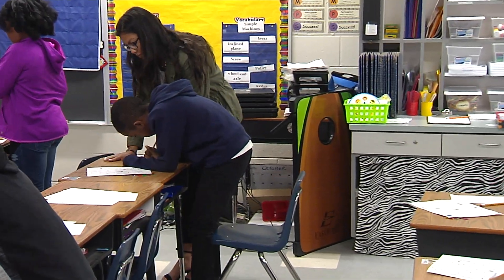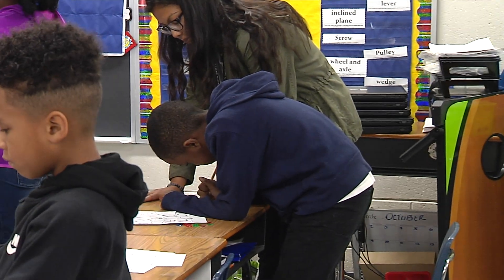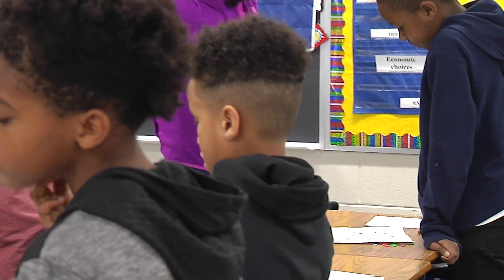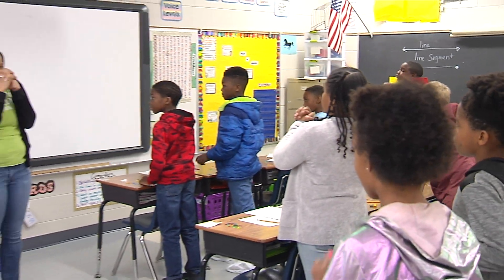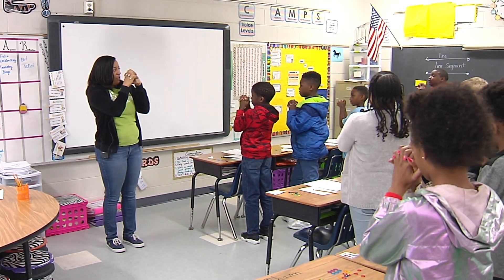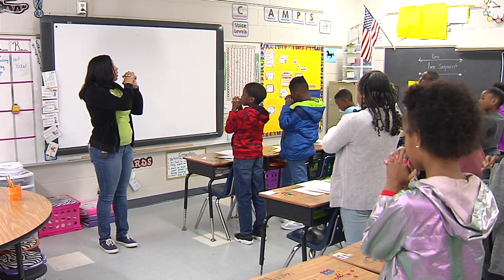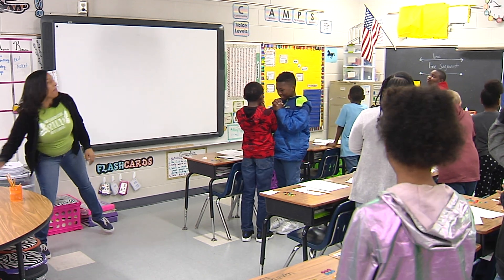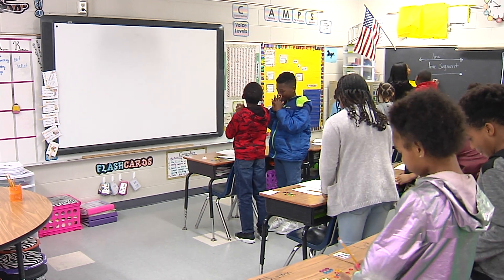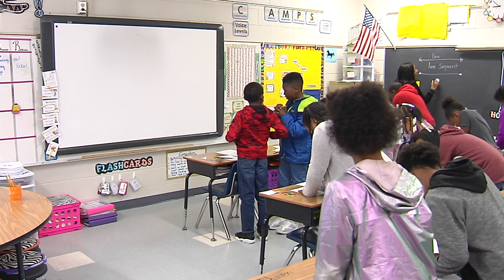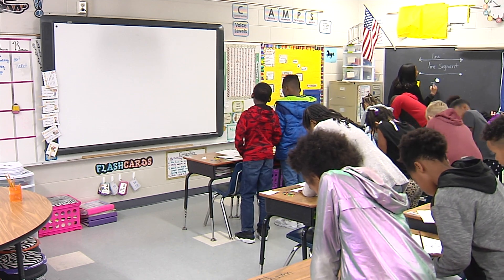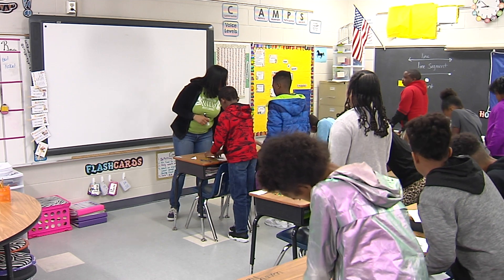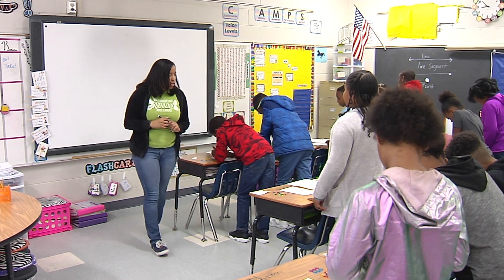Our next vocabulary word is called a point. A point is a location in space. This is the way that we create a point — we take our fist and go like this, making a point. It makes a little dot. So this is called a point. Go ahead and talk to your neighbor and tell them what this is called. A point. On your paper you should be drawing a circle that kind of looks like this — we're going to call that a point. Make sure you're drawing down your point.